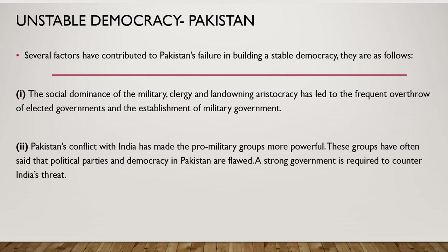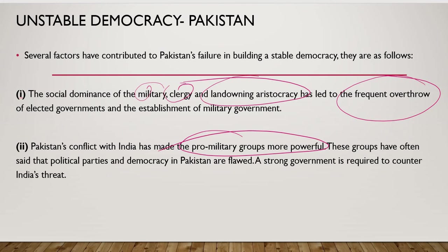Why is Pakistan unstable? There are key factors. First, three groups own Pakistan: the military, the clergy, and the land-owning aristocracy. If democratic leaders don't work according to their wishes, the military overthrows the government. Second, the constant conflict with India — continuously since 1947 — has meant pro-military groups are always supported, as a strong military is seen as a deterrent against India. The political parties are weak and corrupt, and whenever they want to threaten India, the military is backed.